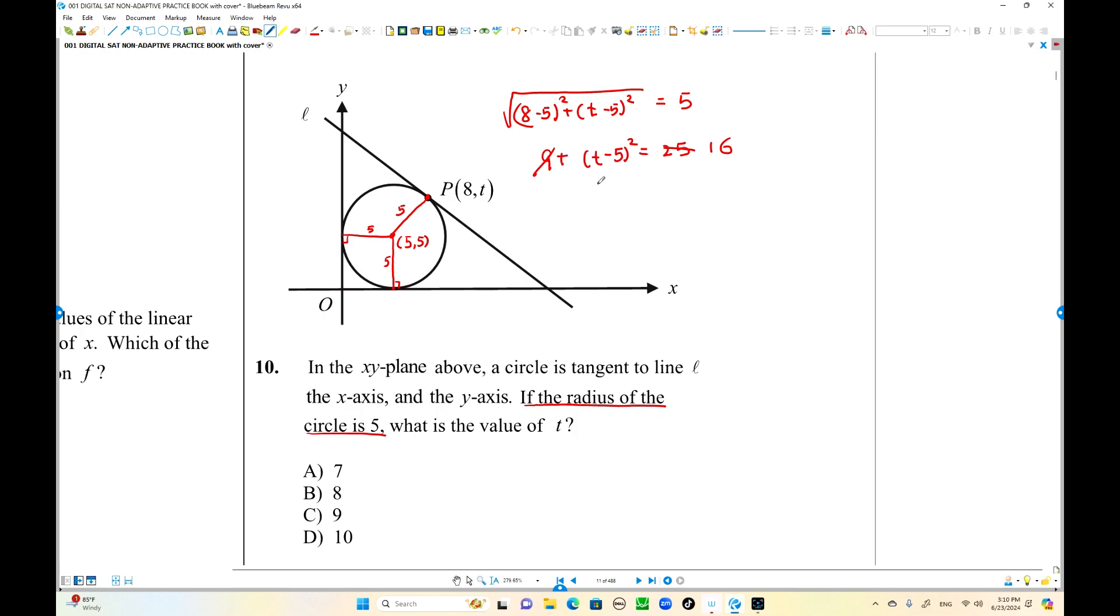So t minus 5 squared is 16. t minus 5 is plus 4 or minus 4. We have two values of t. Minus 5, right? So what is the value of t? Plus 5 both sides. Okay, I'm right. This is okay.